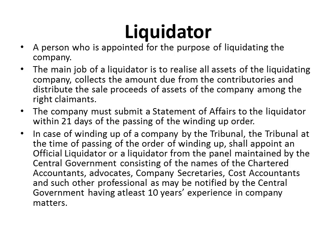In case of winding up of a company by the tribunal, there are two modes of winding up: winding up by the tribunal and voluntary winding up. In case of winding up by the tribunal, the tribunal at the time of passing the order of winding up shall appoint an official liquidator or a liquidator from the panel maintained by the central government consisting of chartered accountants, advocates, company secretaries, cost accountants and other professionals as notified by the central government, having at least 10 years of experience in company matters.